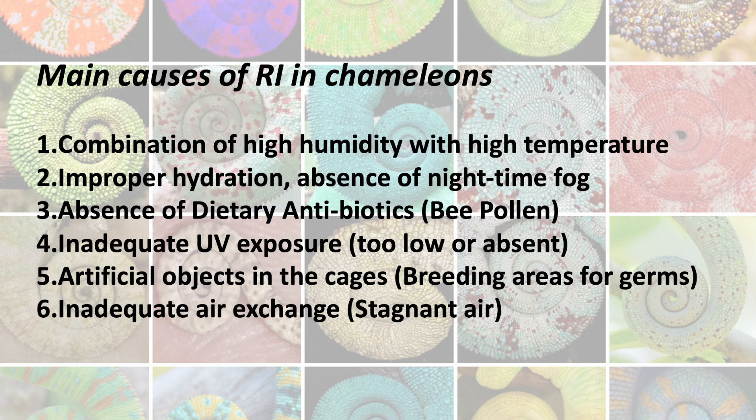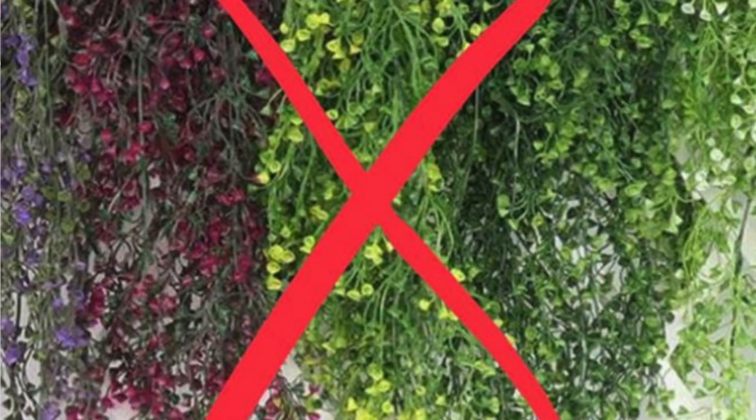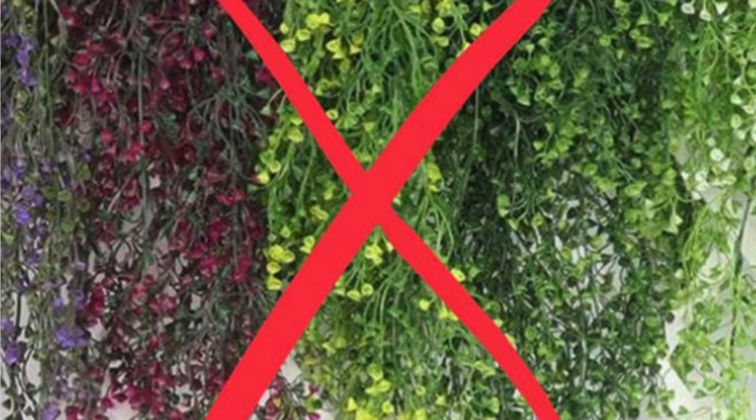A further reason is the presence of artificial objects inside the cage, such as artificial plants, vines, and other objects. These artificial objects do not have the anti-germ function that natural plants and even dead natural wood have. They become a breeding ground when dusted and polluted by biological material, becoming a breeding ground for bacteria and fungi, which then infest the chameleon because their concentration in the limited space of the cage becomes too high.